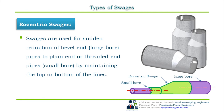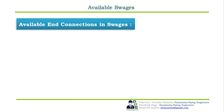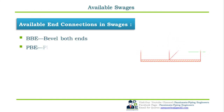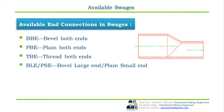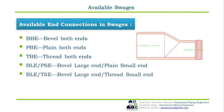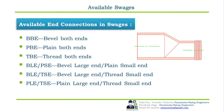Eccentric swedges maintain the side of the pipe — whether top or bottom — and are available in butt welded, socket welded, and threaded configurations. The available end preparations for swedges are: BBE (bevel both ends), PBE (plain both ends), TBE (threaded both ends), BLE/PSE (bevel large end / plain small end), BLE/TSE (bevel large end / threaded small end), and PLE/TSE (plain large end / threaded small end).